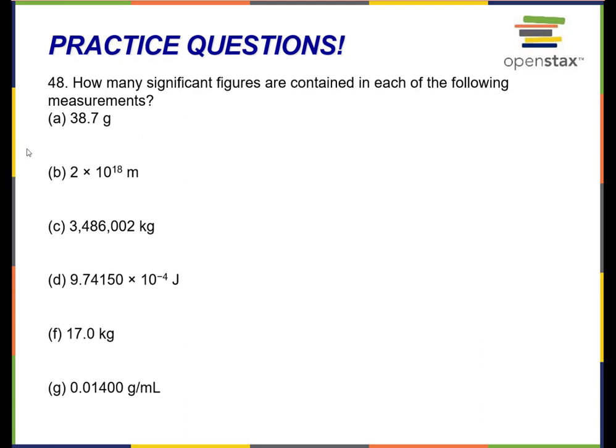How many significant figures are contained in each of the following measurements? Go ahead and pause this one and give it a shot. Okay, 38.7 grams — this one is easy. There are no zeros, so I'm going to underline all the significant figures. There are three. If there are no zeros, all the numbers are significant, because a number that's not zero is always significant.